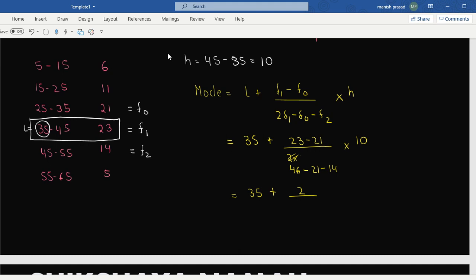And 2 multiplied by 10 would become 20. So now this can be written as 35 plus 20 over 11. That's 35 plus 1.8 equals 36.8. So the answer will become 36.8.